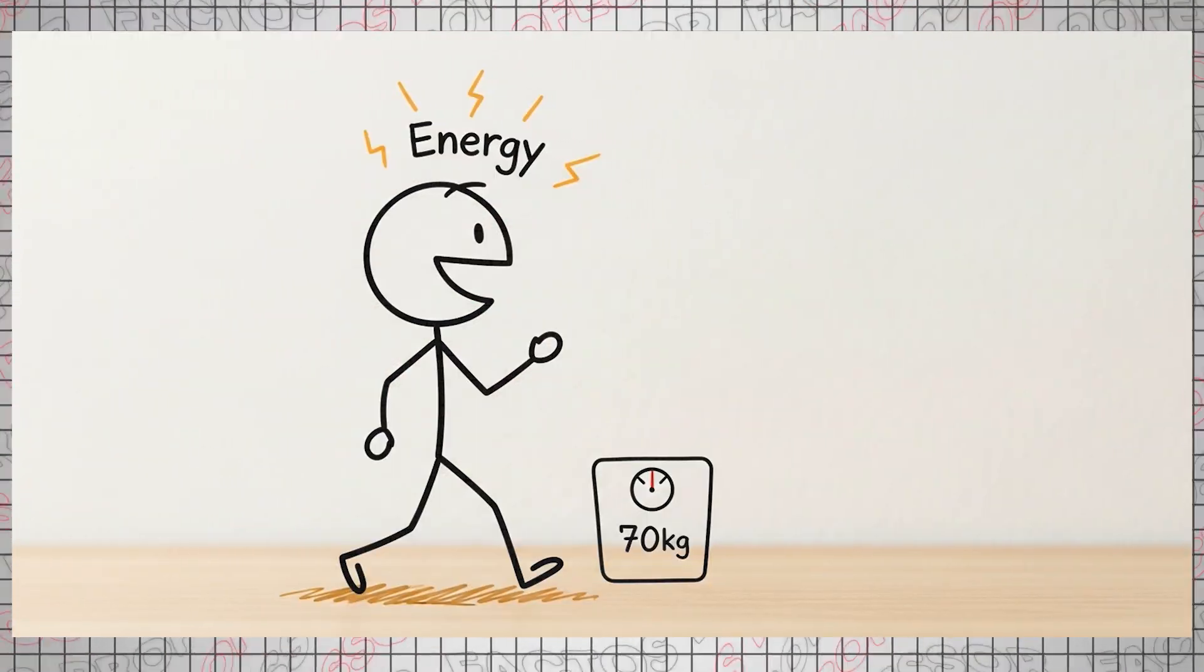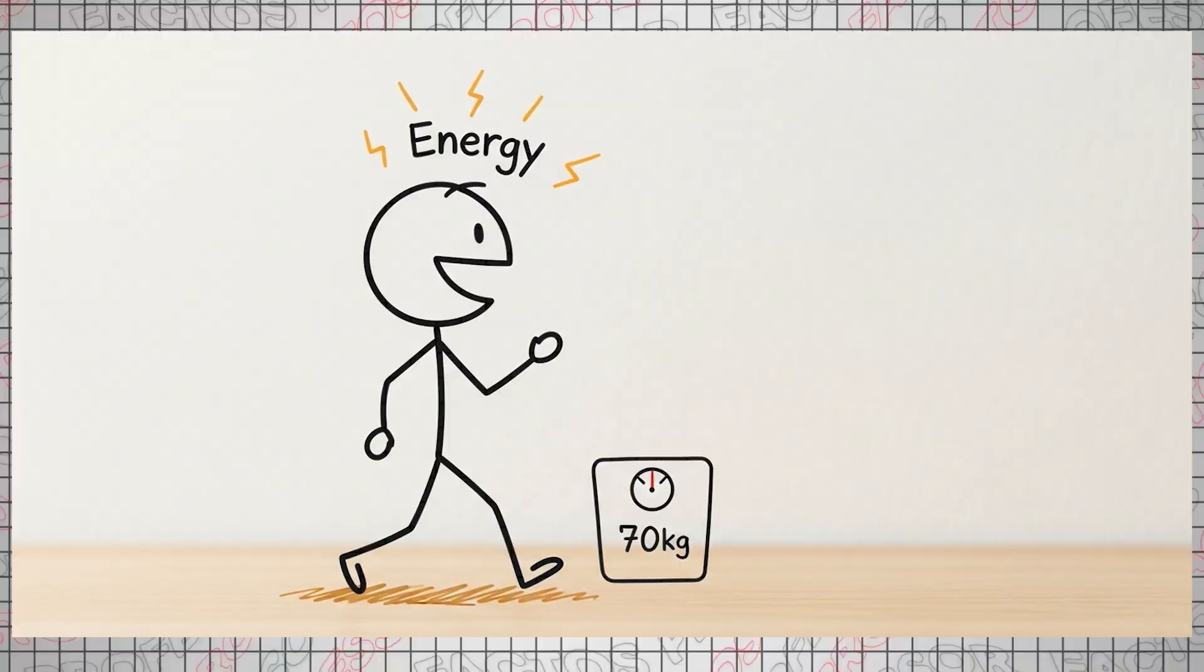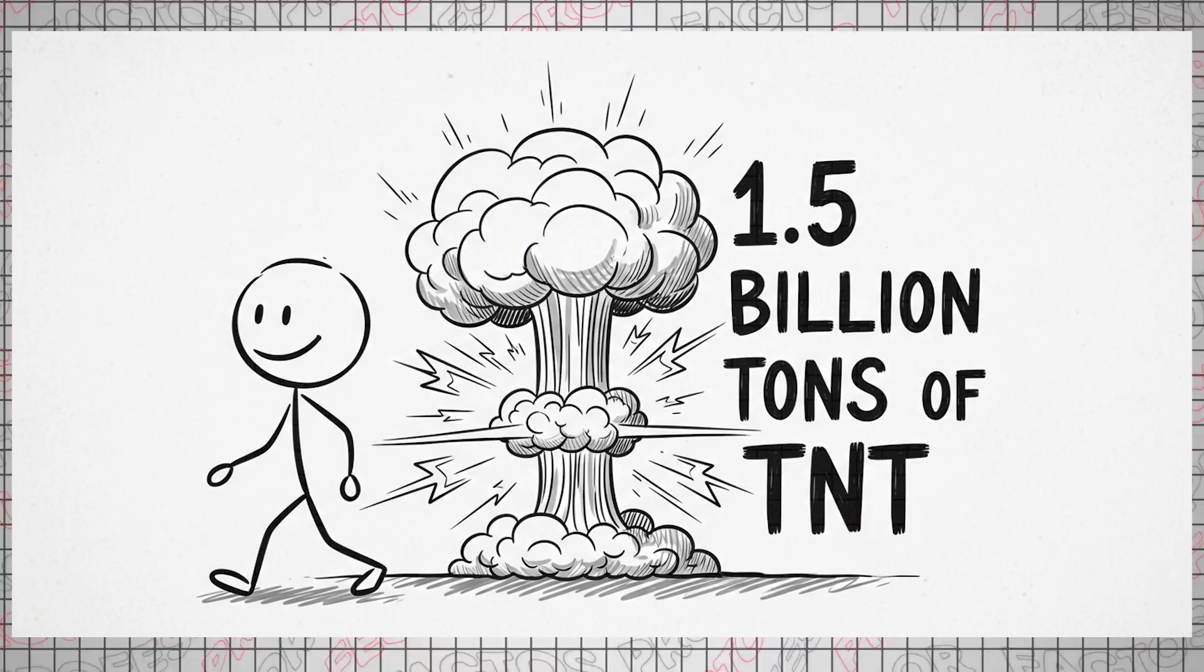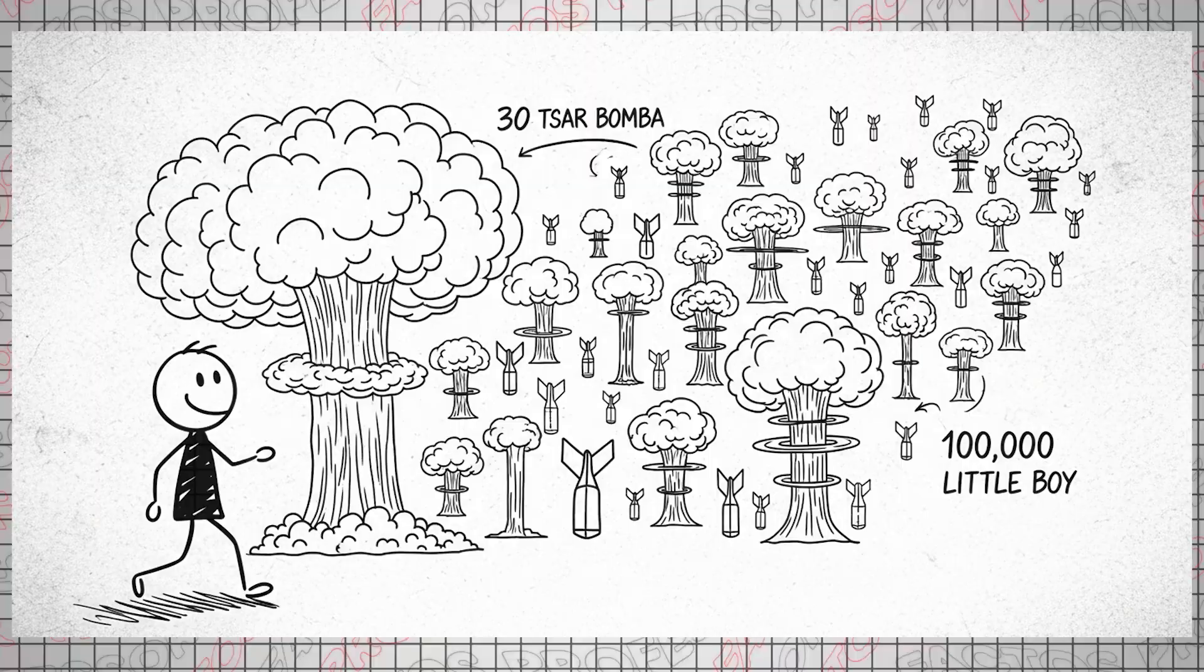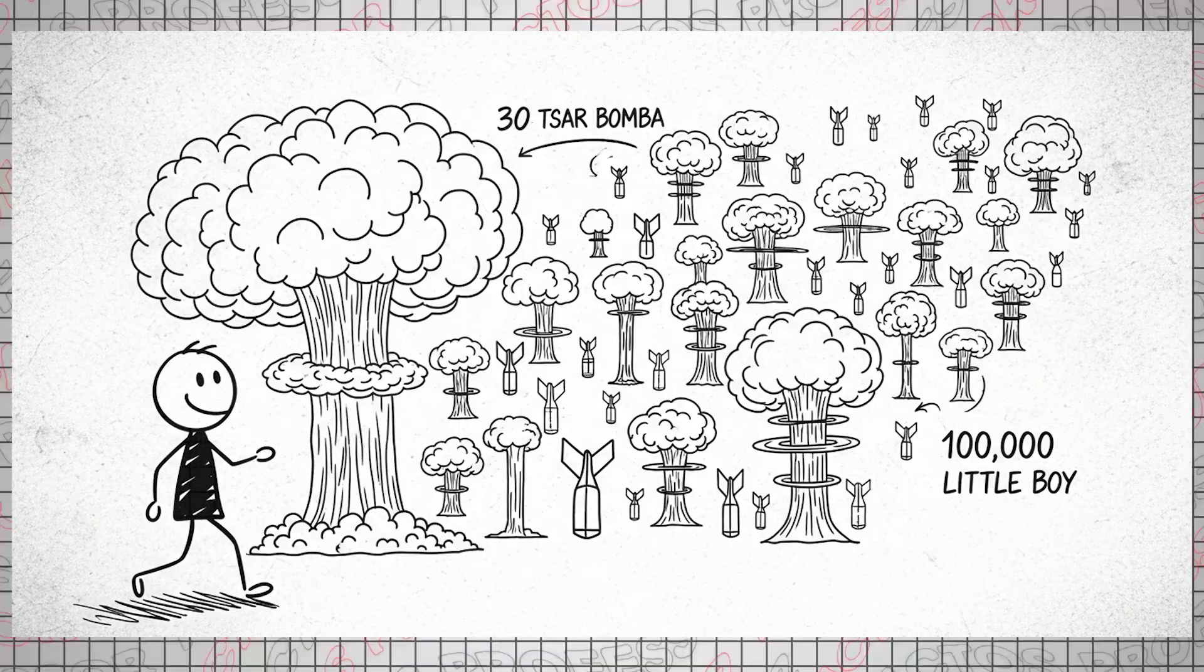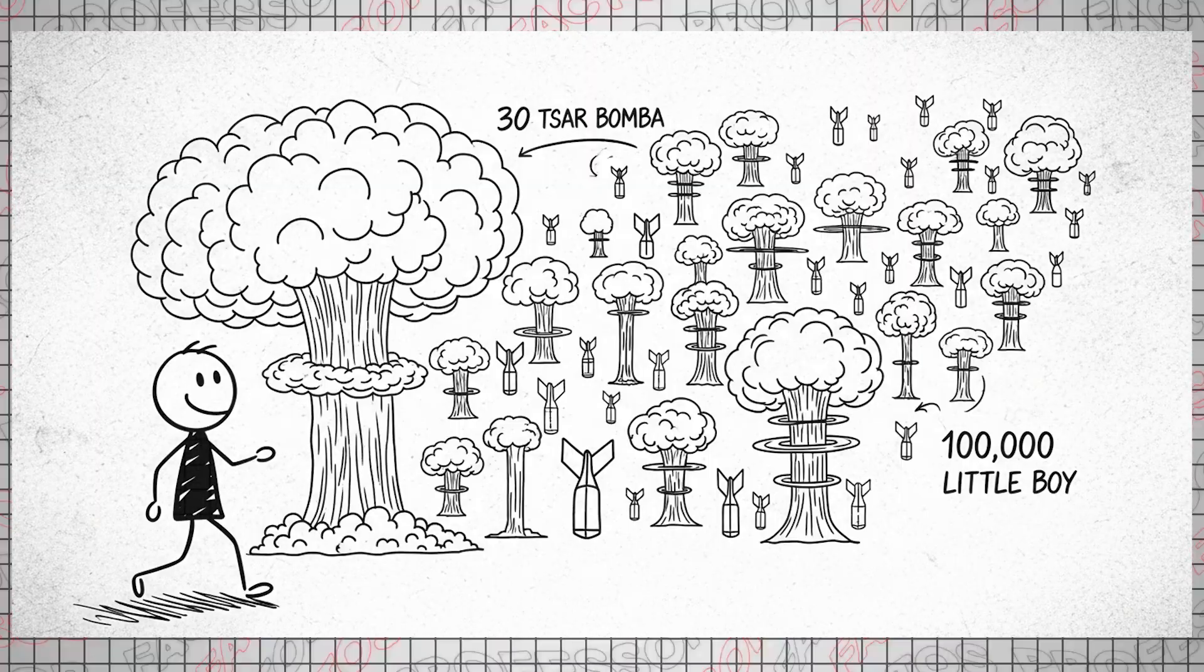If you weigh 70 kilograms, congratulations, you are a walking energy source equivalent to the explosive power of 1.5 billion tons of TNT. That's 30 Tsar Bomba nuclear devices or 100,000 little boy atomic bombs.